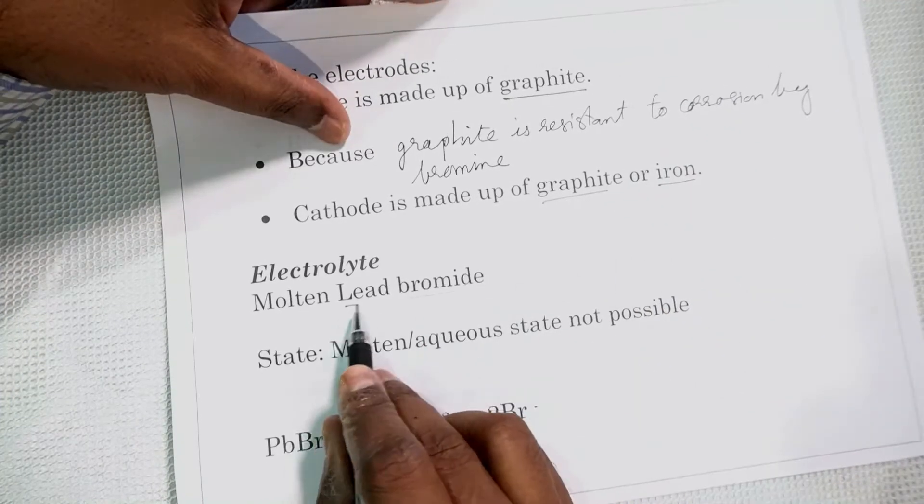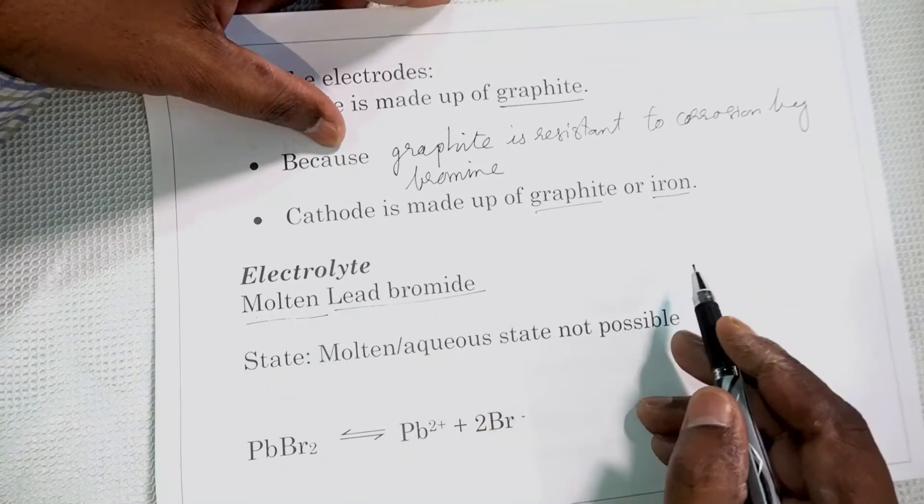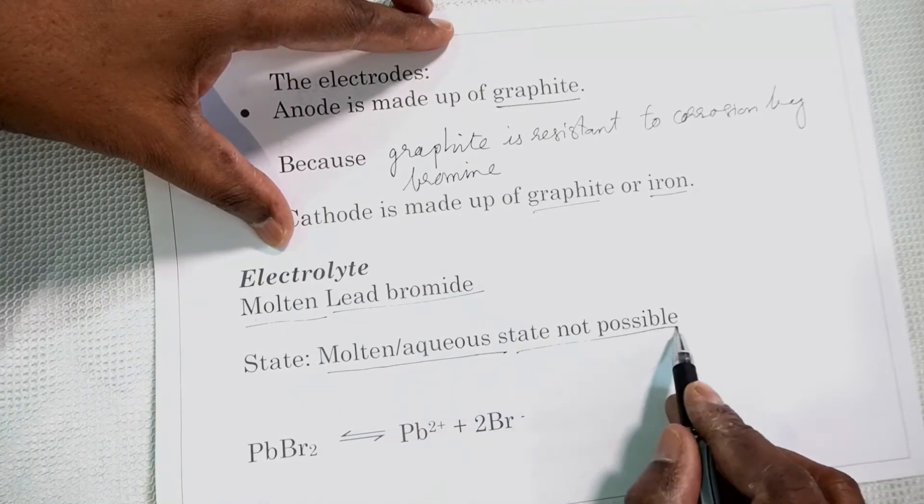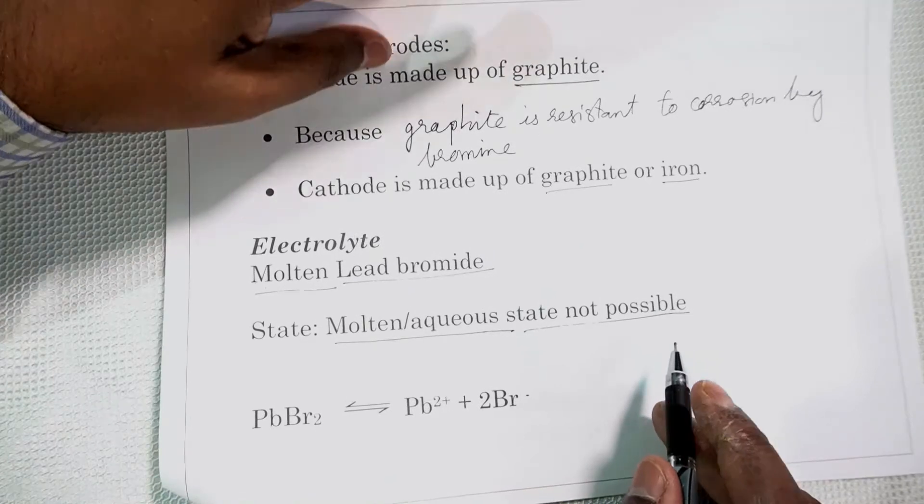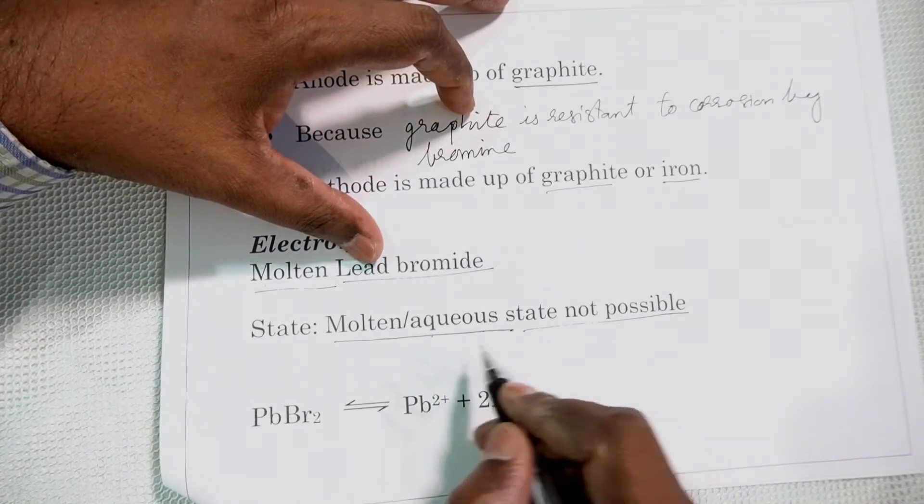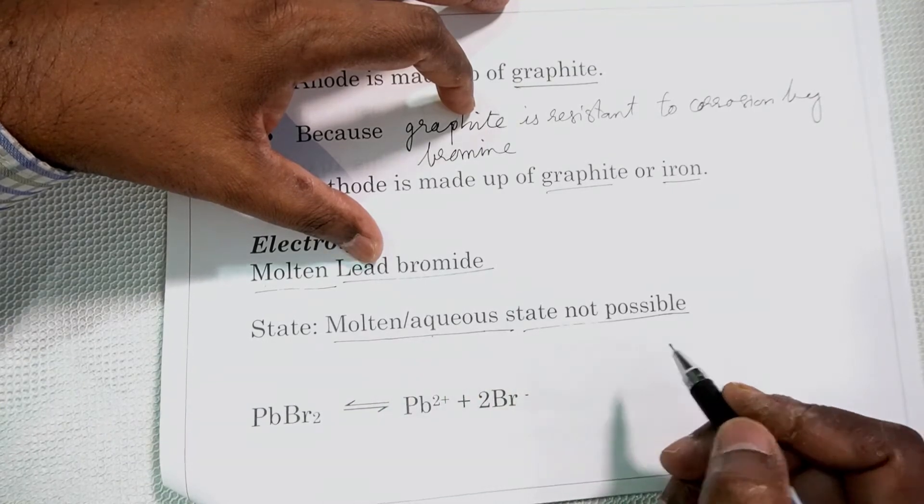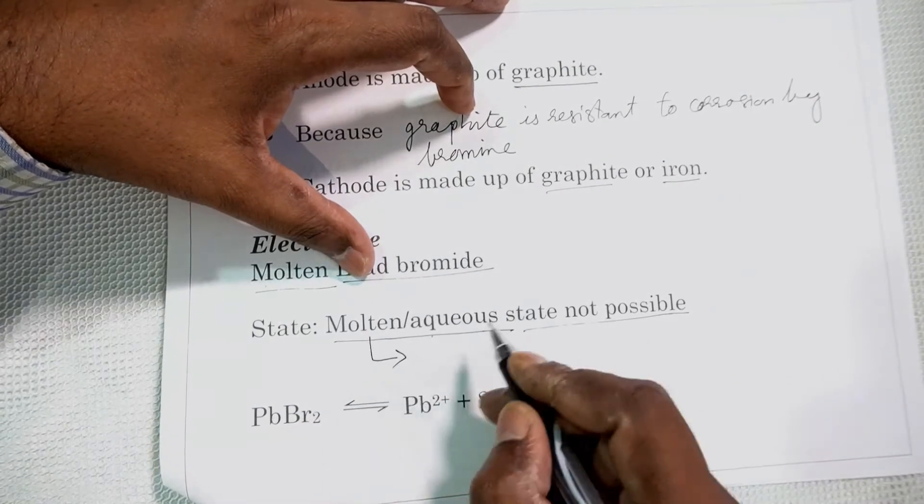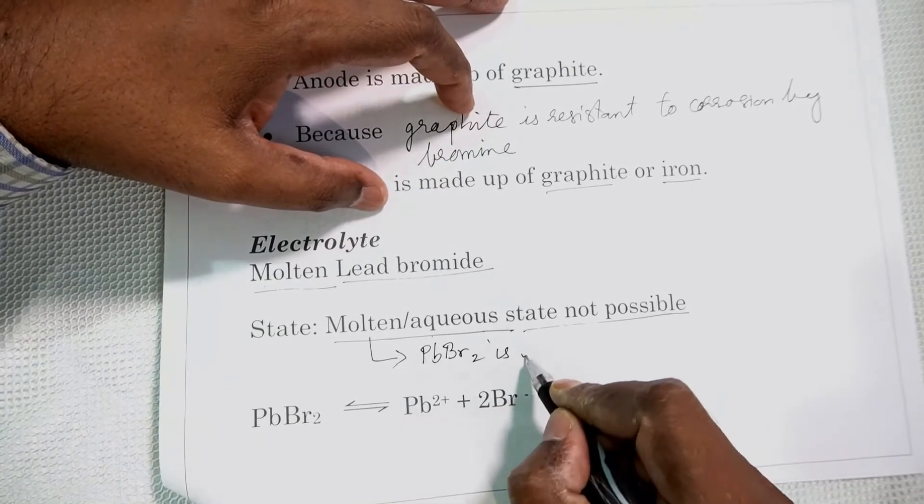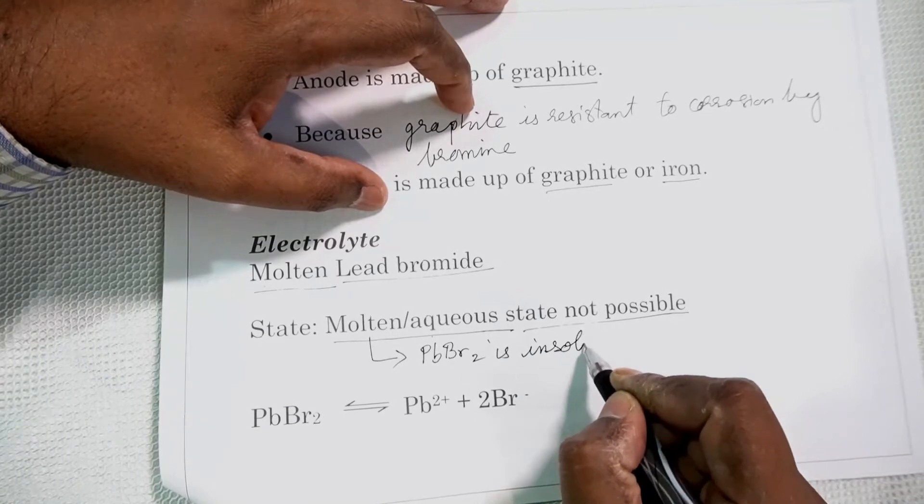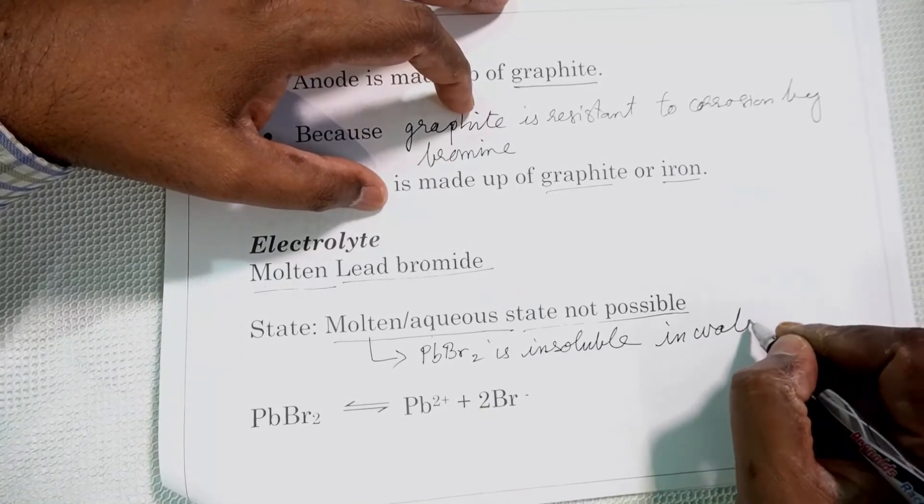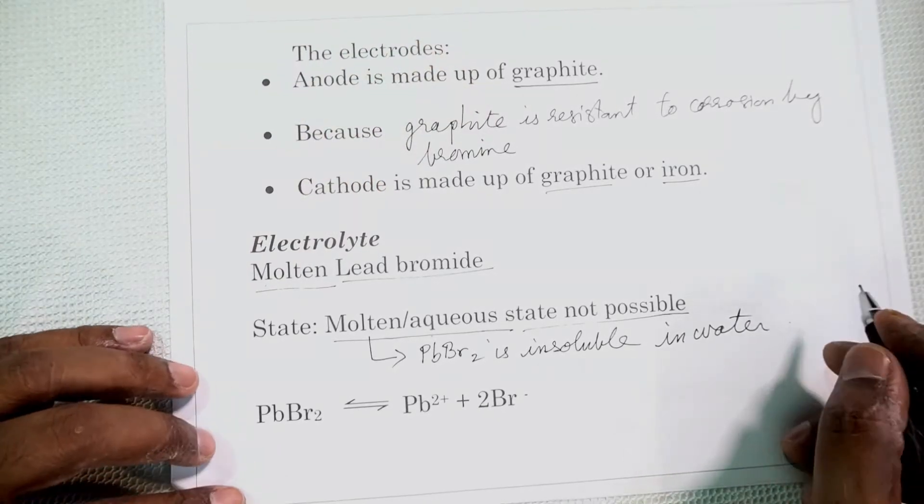Now the electrolyte is molten lead bromide. See the state here, molten or aqueous state is usually used for electrolysis. Now here the aqueous state is not possible. Molten state is used. Aqueous state is not possible. Why? Only molten state. Because lead bromide PbBr2 is insoluble in water. So we cannot have aqueous solution. So only option is to have molten state.